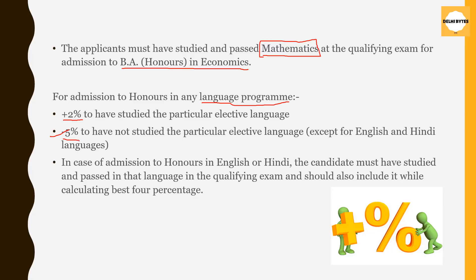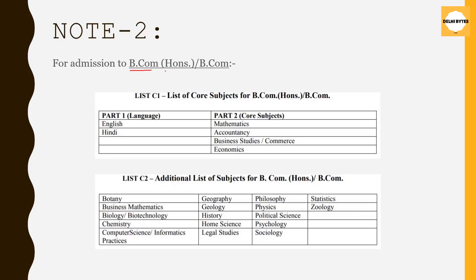You can get a disadvantage of minus 5% if you have not studied that language at your Plus 2 level. This does not apply in the case of English or Hindi. For English or Hindi, you have to have studied that language at your qualifying examination level, and if you are taking admission in English Honors, you must include it while calculating your best 4 percentage. For other languages, it's plus 2% if studied and minus 5% if not studied.